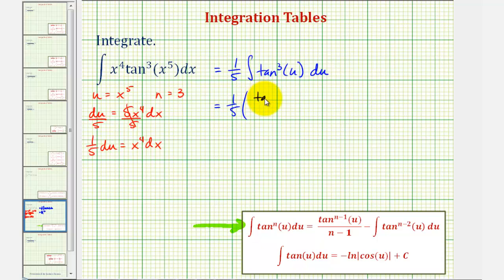we have tan^2(x^5) divided by n-1, which is 3-1 or 2.